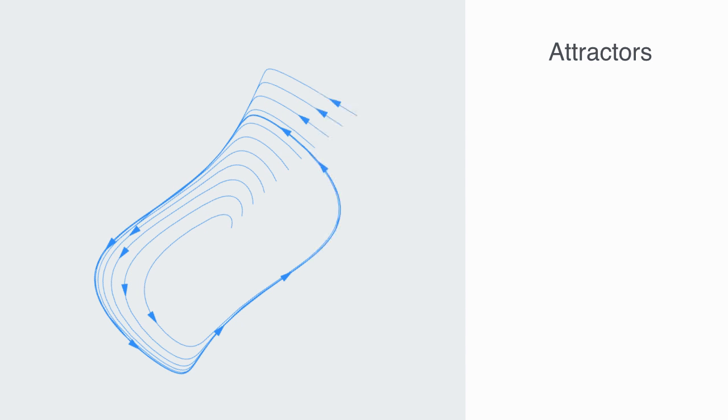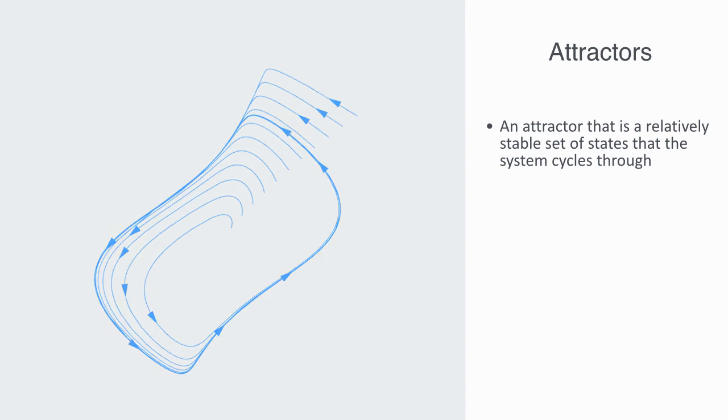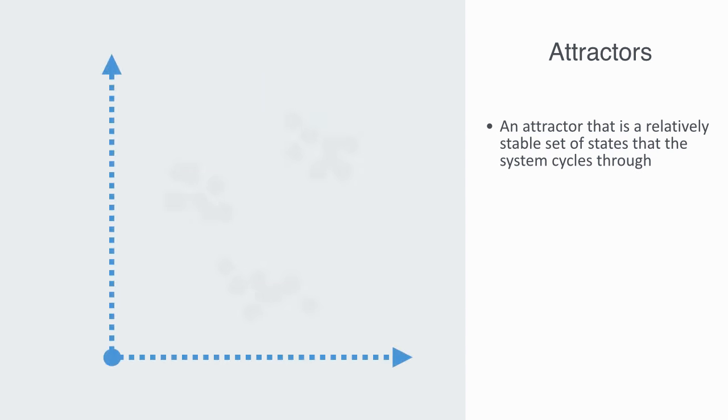Negative feedback loops create what we might call an attractor—that is, a relatively stable set of states that the system cycles through. In order to understand an attractor, we need to firstly talk about what is called a state space. The state space of a system is a model that tries to capture all of the different states to that system.